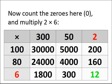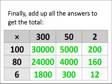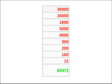There are no zeros here in the two or the six, so you simply multiply two by six, gives you 12. Finally, add up all the answers to get the total. Adding those together, you get 65,472.